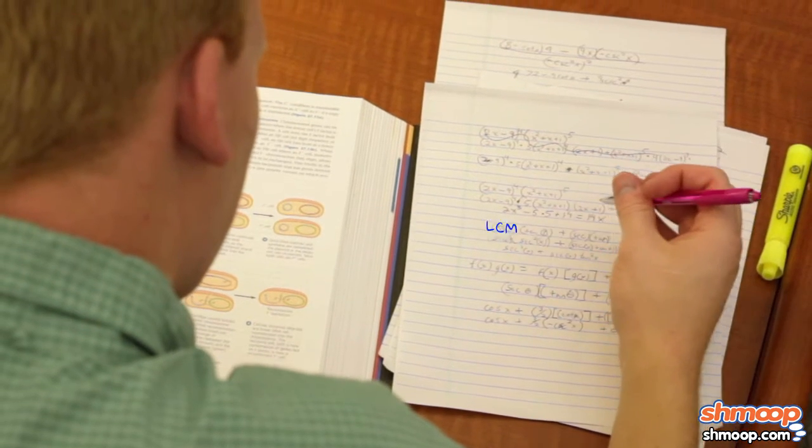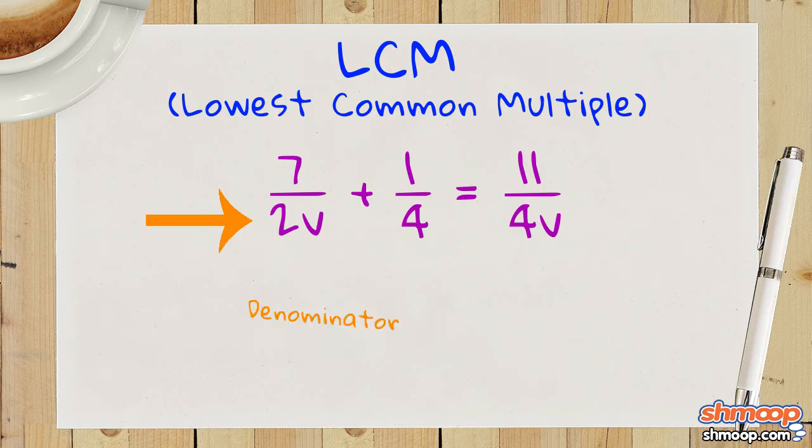First, Brian has to find the lowest common multiple, or LCM, of the denominator.